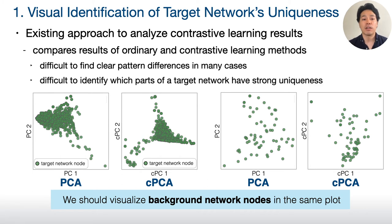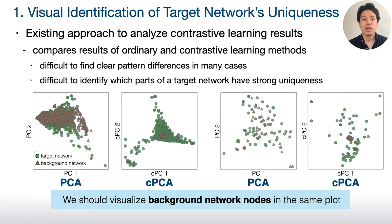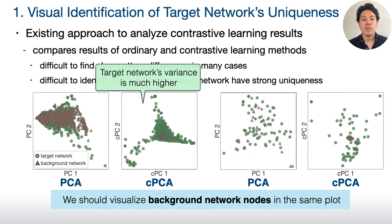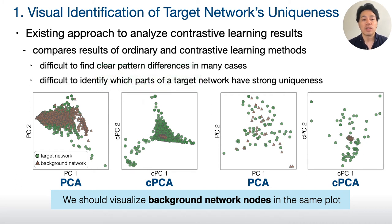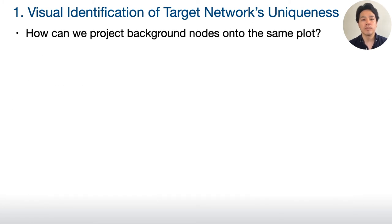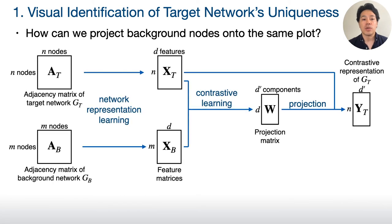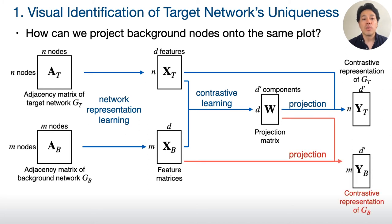Thus, we should visualize background network nodes in the same plot. Here are the plots with background network nodes. In these embedding spaces, the target networks have much higher variances than the background networks. These results show that contrastive PCA successfully found the uniqueness of the target networks. Also, similar to PCA, a contrastive PCA result represents a dissimilarity between nodes. Thus, based on the distance from background network nodes, we can identify which nodes are highly unique, as annotated with red boxes in the figure. This can be achieved in a straightforward way because we already have a projection matrix. With the background network feature matrix, we can project background nodes in the same plot.